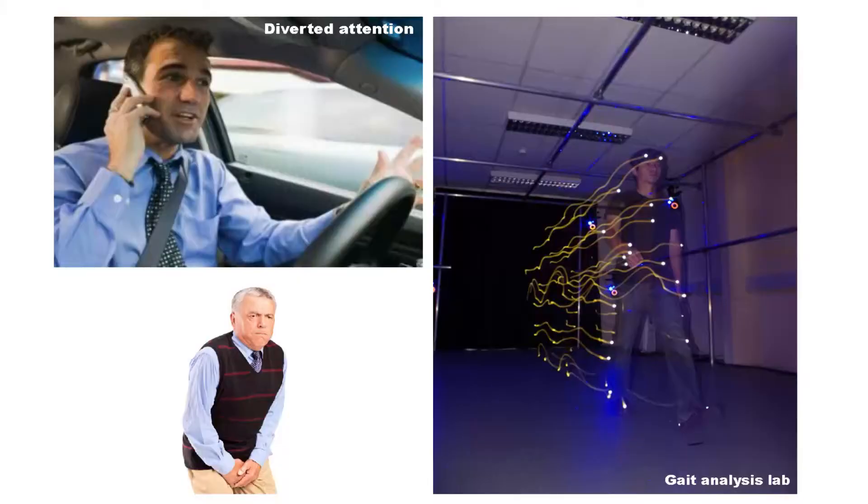So we're testing our hypothesis using three-dimensional motion capture technology. Exactly the same as Peter Jackson used to make Gollum in Lord of the Rings. We take our patient, we put some nice reflective markers on them and we watch them walk. And we analyze how they walk when they're completely undistracted, when they're performing a task which diverts their attention and when they really, really need to get to the bathroom. We're comparing how their gait changes.